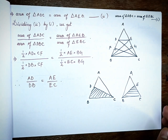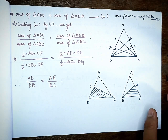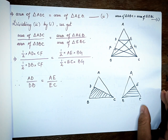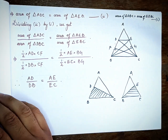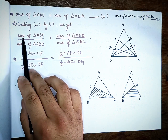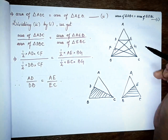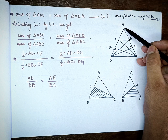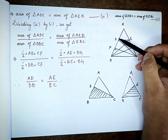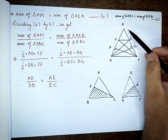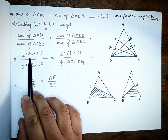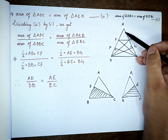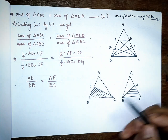The area of triangle ADC uses base AD and altitude CF, where CF is the perpendicular from C to AB. The area is expressed as base into altitude.